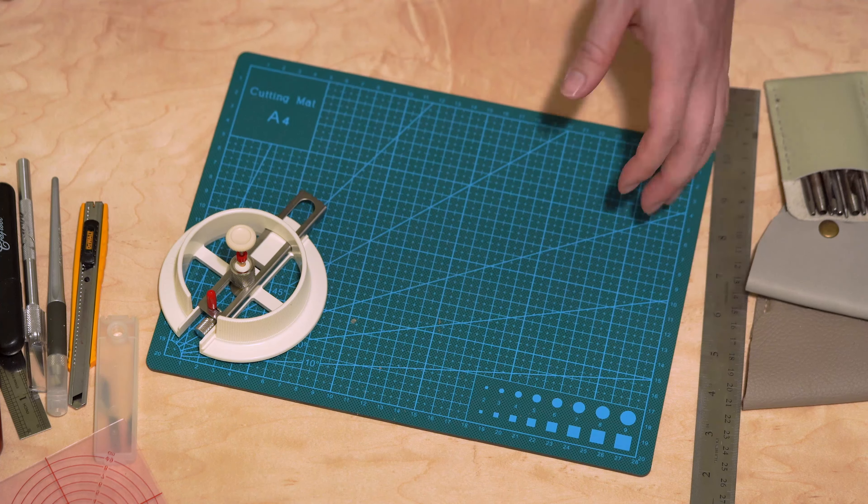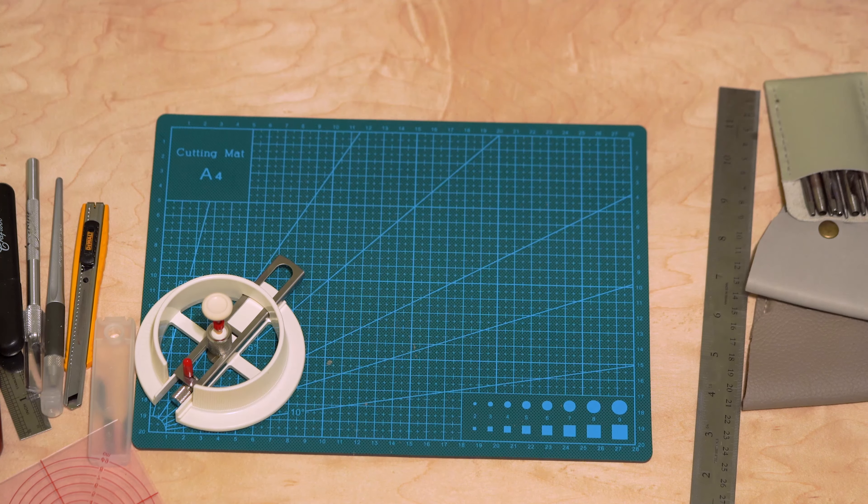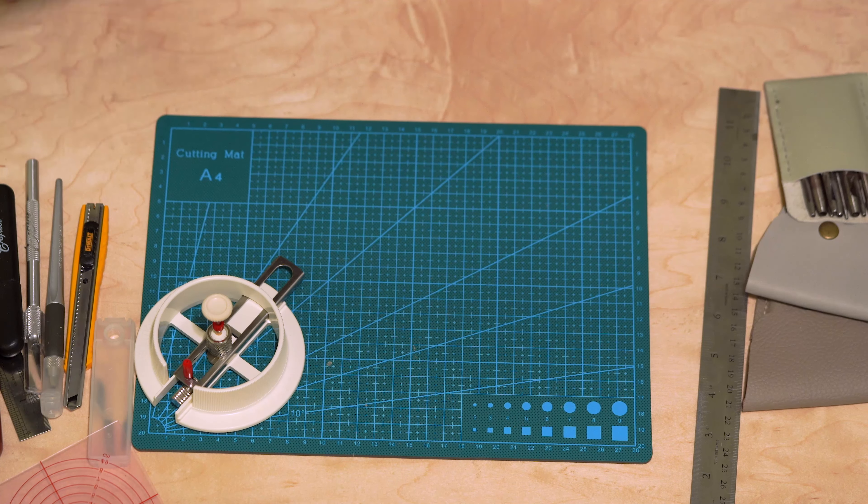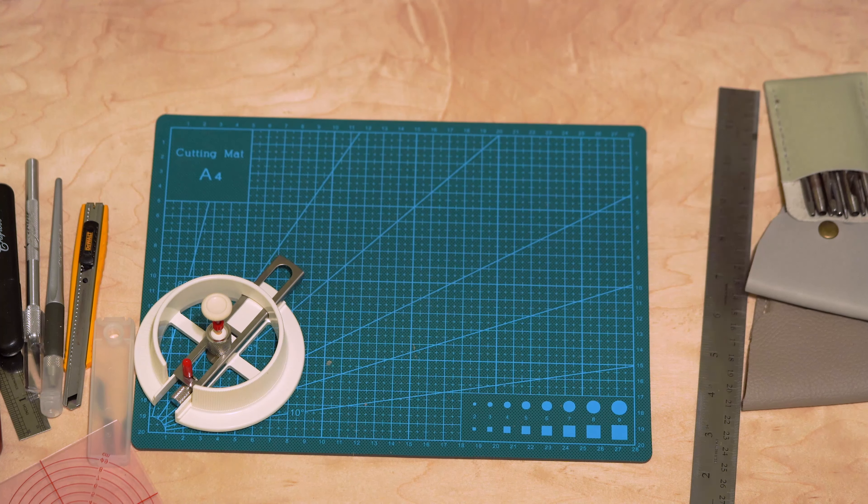Obviously scrap leather is not gonna work so I'm gonna actually use a real piece of my nice full grain cowhide and see if I can just cut a coaster shape out of it really quick.